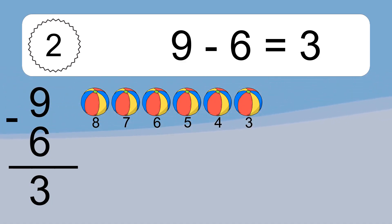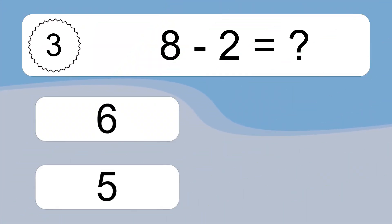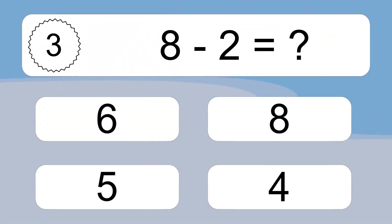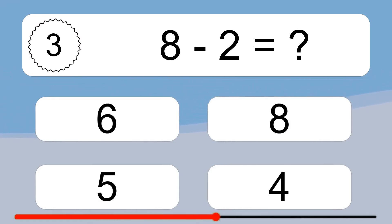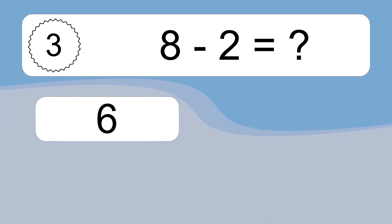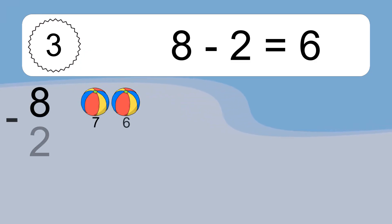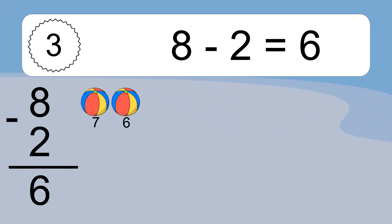8 minus 2 equals what? 8 minus 2 equals 6. Let's count it. 7, 6.